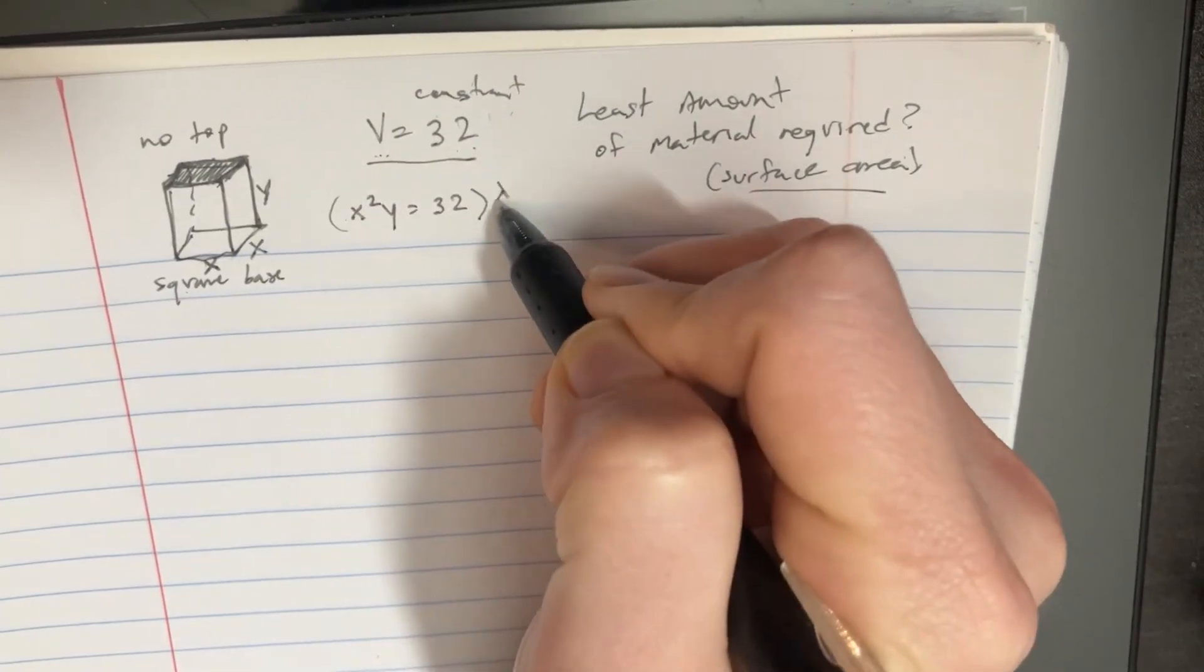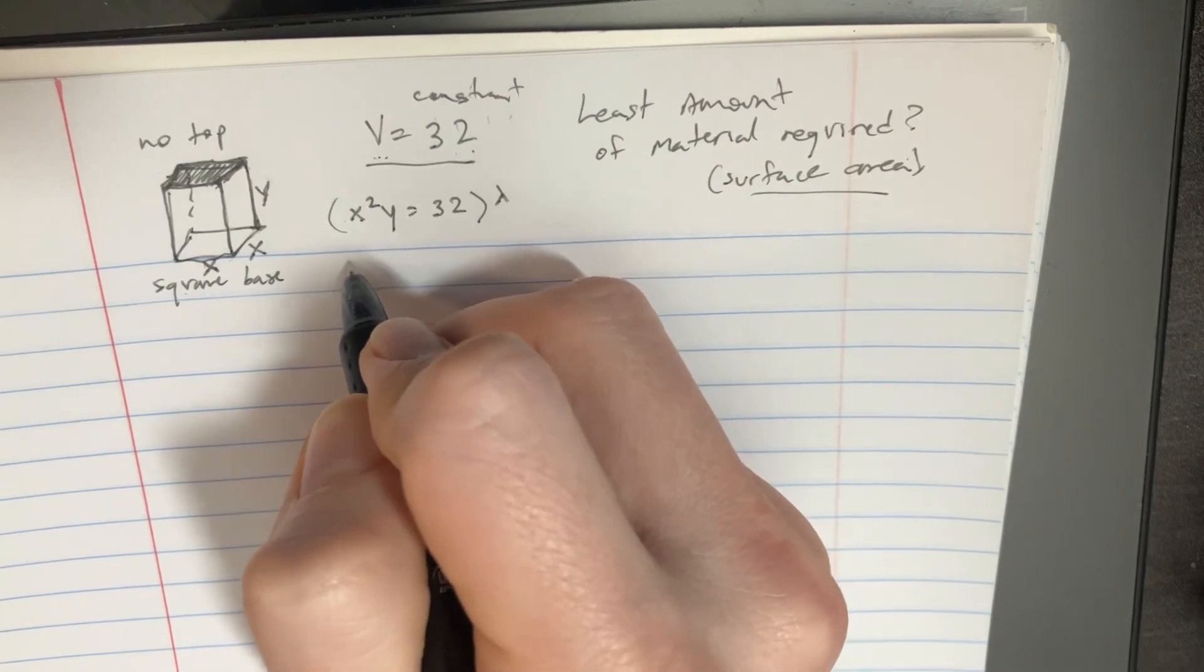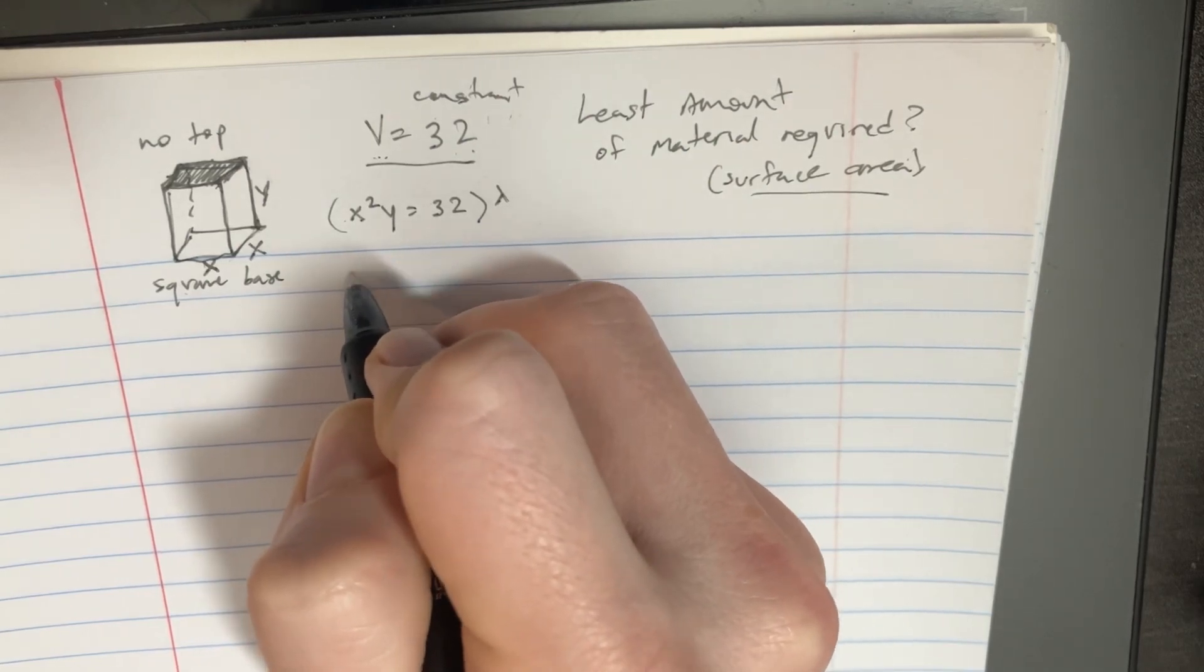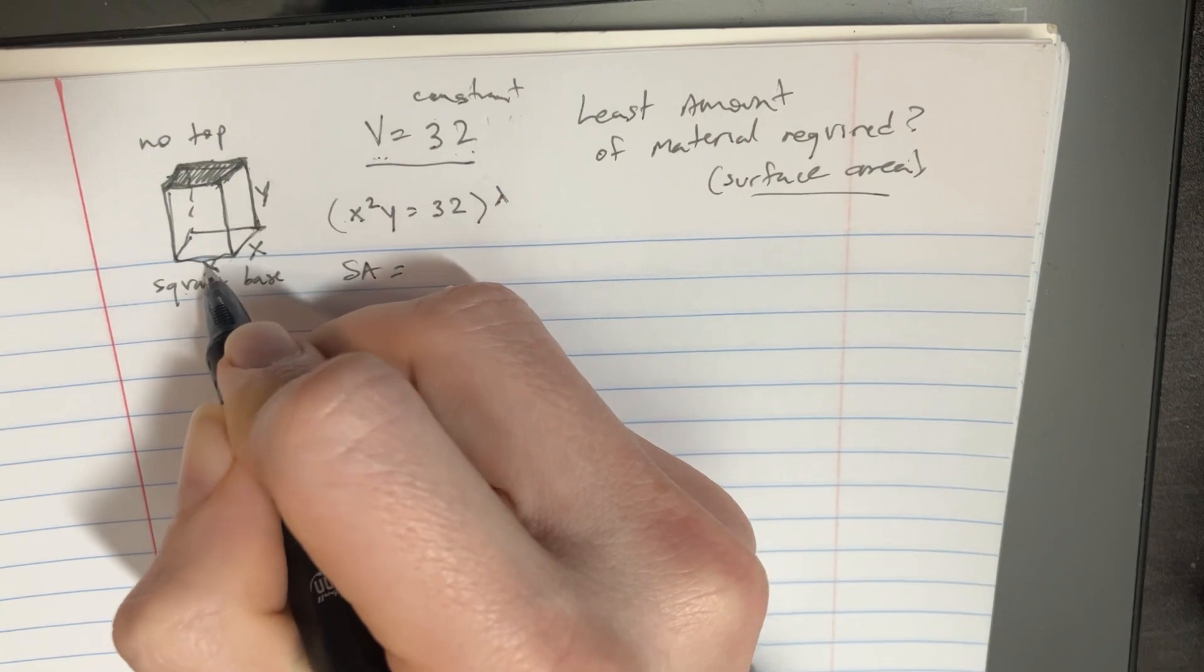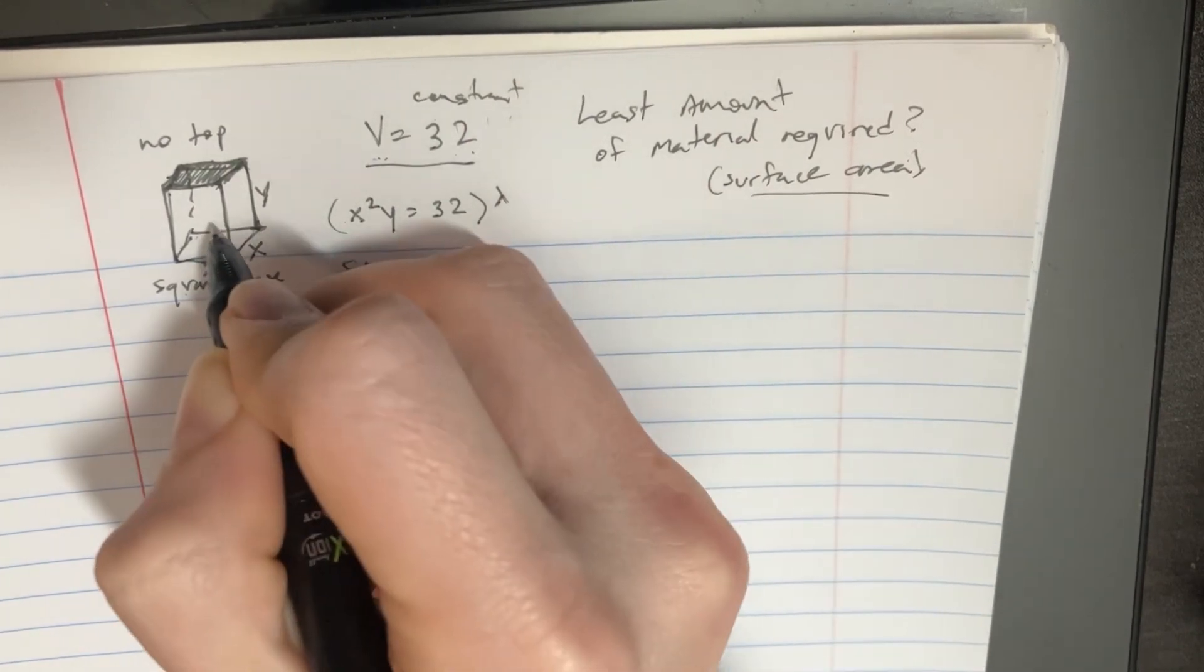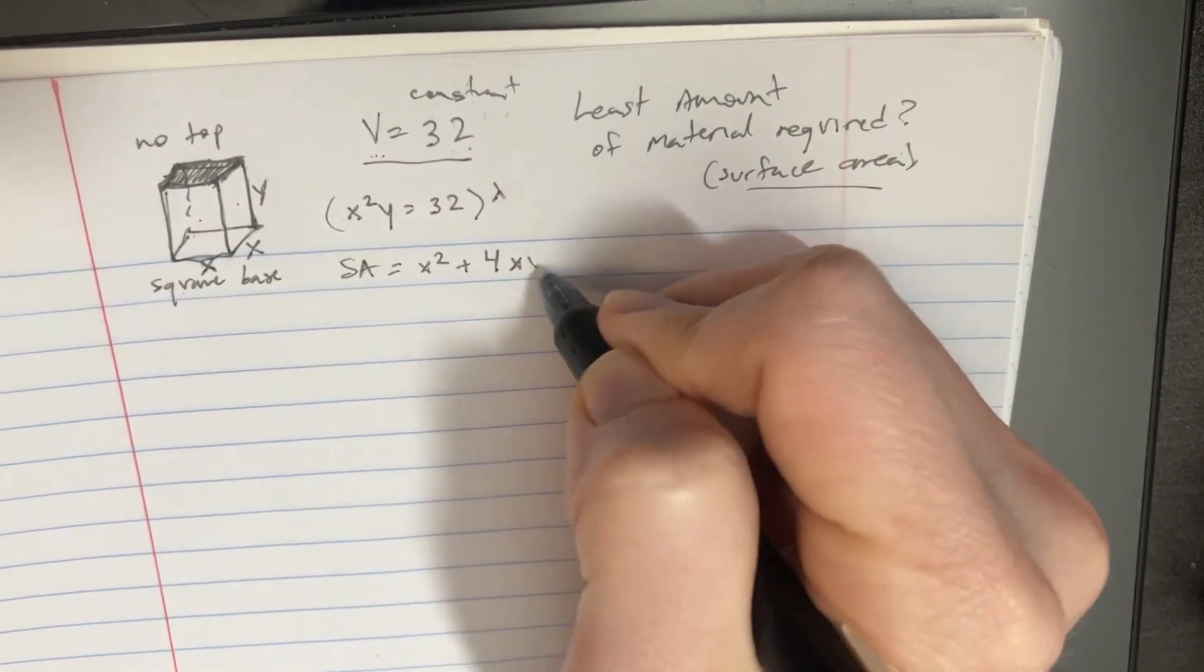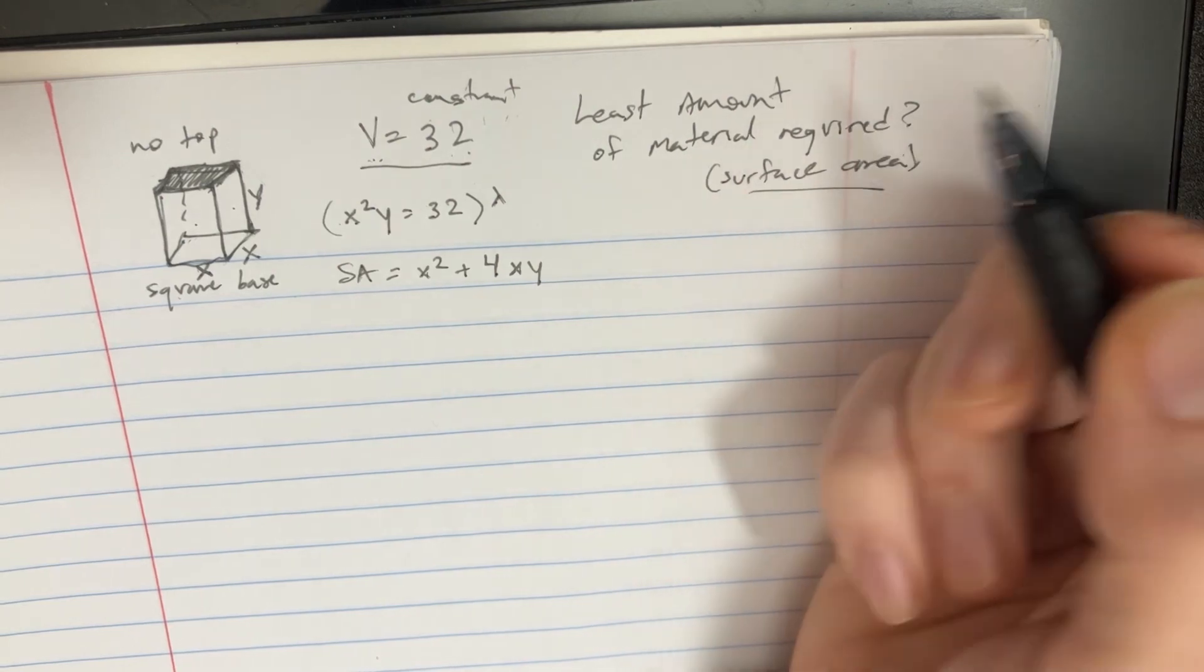We're going to want to represent this thing with like a lambda too later. Then we're going to find the function which is going to be like the surface area function. So that's going to be just the area of this side which is x squared plus one, two, three, four faces of xy.